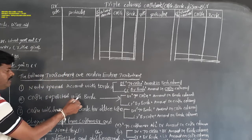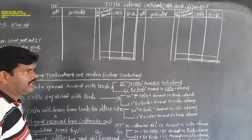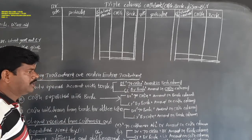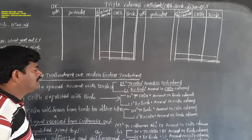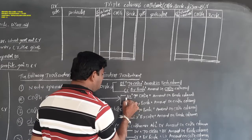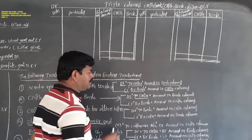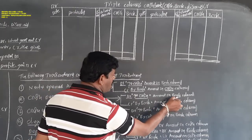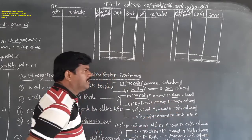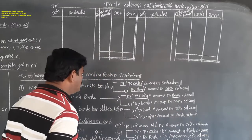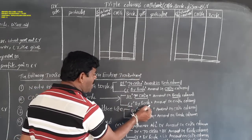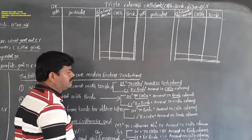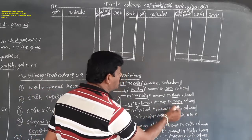Cash deposited with bank, cash paid into bank, cash sent to bank — all are the same. You have to record on the debit side as 'To Cash' with the amount in the bank column. On the credit side on the same day, record 'By Bank' with the amount in the cash column. These are opposite directions.